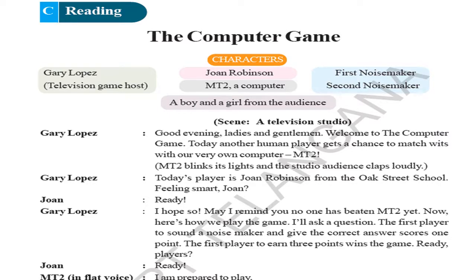Today, another human player gets a chance to match with our very own computer MT2. MT2 blinks its light and the studio audience claps loudly. Today's player is John Robinson from Oak Street School. 'Feeling smart, John?' 'I hope so.' 'May I remind you — no one has beaten MT2 yet. Here's how we play: I'll ask a question, the first player to sound a noisemaker and give the correct answer scores one point. The first player to earn three points wins the game.'